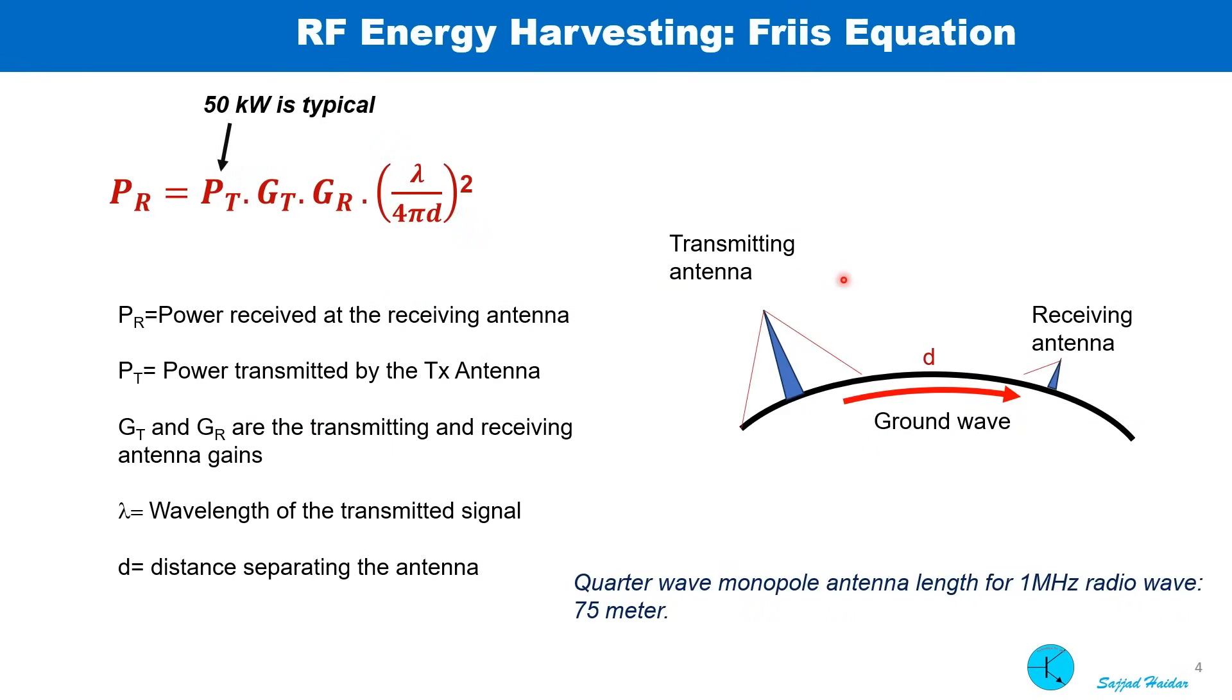So if we wish to harvest energy from medium waves, how much power can we get from a location on the receiving end? That question can best be answered by an equation called Friis equation. Pr is the power at the receiving end, Pt is the power of the transmitter, Gt is the gain of the transmission antenna, Gr is the gain of the receiving antenna, lambda is the wavelength of the signal, and D is the distance from the transmitting to the receiving end.